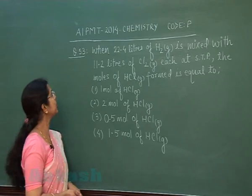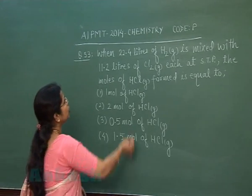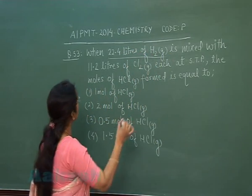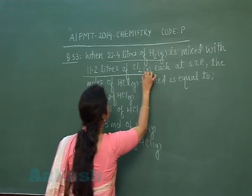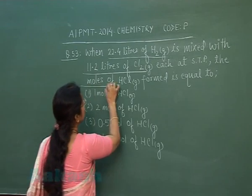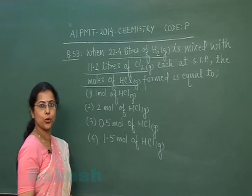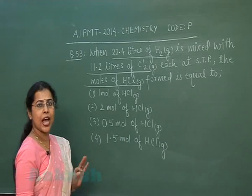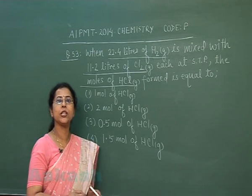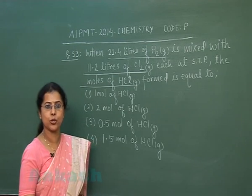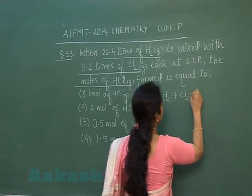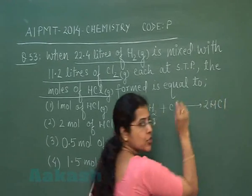Our next question is question number 53. When 22.4 litres of hydrogen gas is mixed with 11.2 litres of chlorine gas, each at STP, the moles of HCl formed is equal to? Since both hydrogen and chlorine are reacting gases, we need to apply chemical stoichiometry. The equation is: H₂ + Cl₂ → HCl.